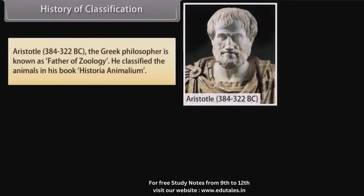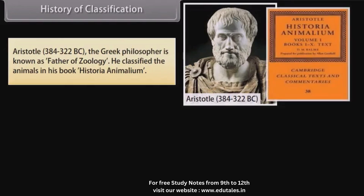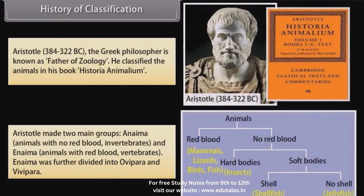Aristotle (384 to 322 BC), the Greek philosopher, is known as the father of zoology. He classified animals in his book Historia Animalium. Aristotle made two main groups: Anima — animals with no red blood (invertebrates) — and Anima — animals with red blood (vertebrates). Anima was further divided into ovipara and vivipara.